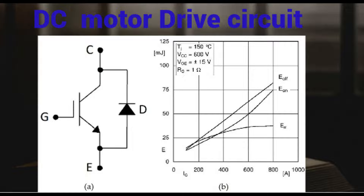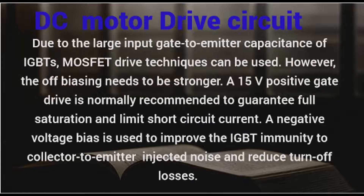IGBTs are voltage-controlled devices and require gate voltage to establish collector-to-emitter conduction. Recommended gate-drive circuitry includes substantial on and off biasing. Due to the large input gate-to-emitter capacitance of IGBTs, MOSFET drive techniques can be used; however, the off-biasing needs to be stronger. A 15V positive gate drive is normally recommended to guarantee full saturation and limit short-circuit current. A negative voltage bias is used to improve IGBT immunity to collector-to-emitter injected noise and reduce turn-off losses.